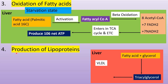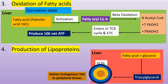The next function is the production of lipoprotein. In the liver, fatty acid and glycerol are combined by lipogenesis to form triacylglycerol. These triacylglycerols are transported to the peripheral tissue in the form of VLDL. VLDL is synthesized in the liver to transport triacylglycerol from the liver to peripheral tissue. If VLDL is not synthesized in the liver, triacylglycerol accumulates in the liver and causes fatty liver.